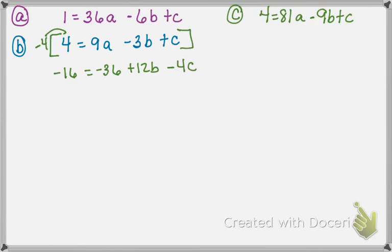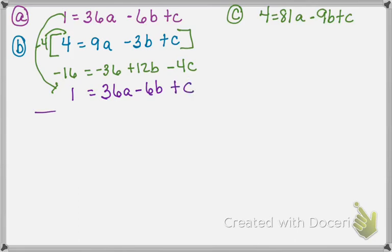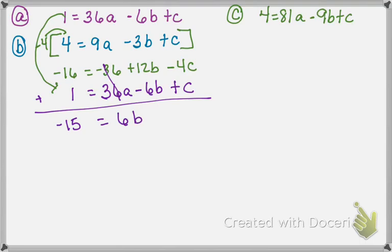Now I've changed this equation and I'm going to put these together, rewriting the first one underneath it. When I add them together, the a's cancel out. I've got negative 16 and 1, so I have negative 15. Then these combine to give 6b, and then negative 3c. So now this combined result is going to be called equation d: negative 15 equals 6b minus 3c.